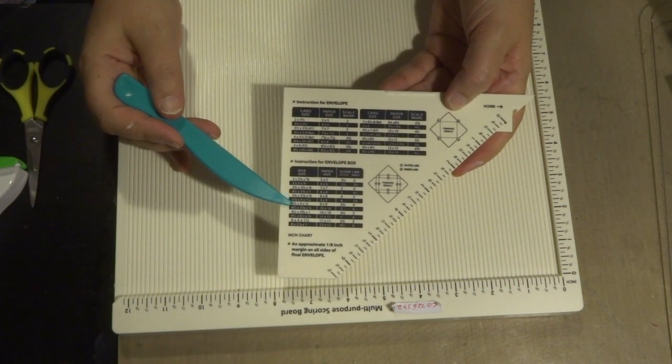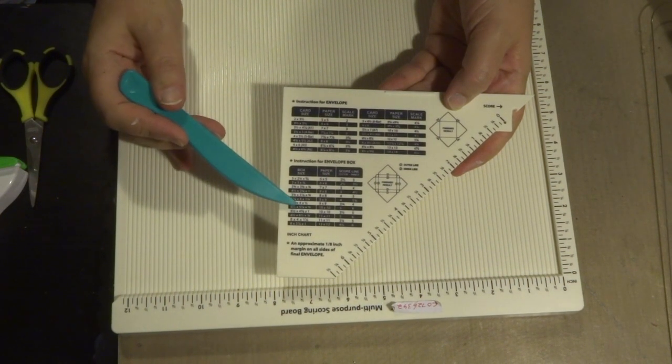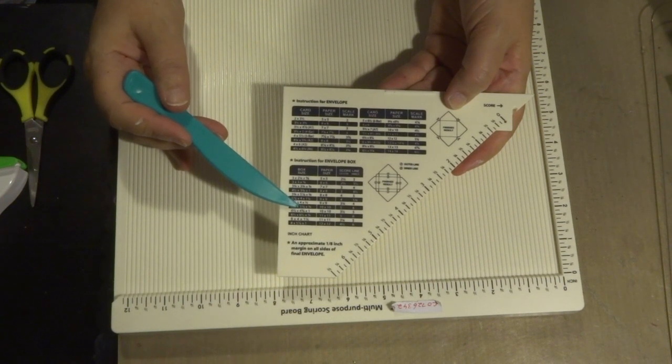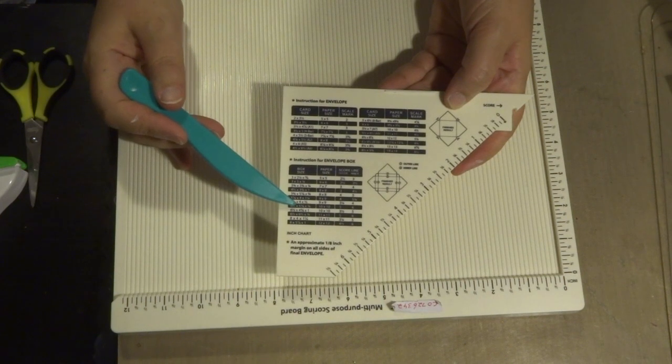In this instance there's a measurement here for six and a half and five and one eighth, which is perfect because that's going to house my five by five and five eighths of an inch card.